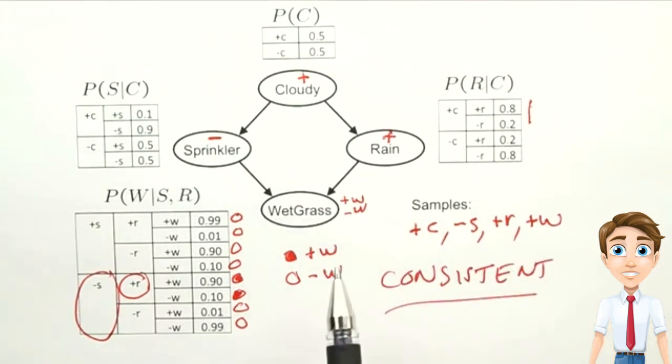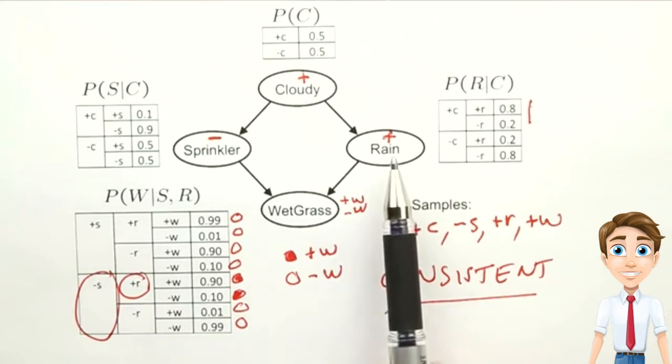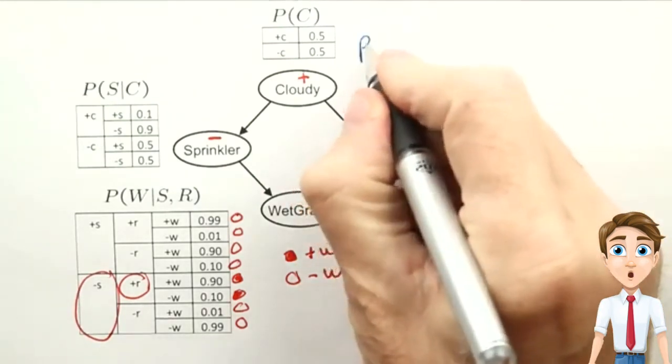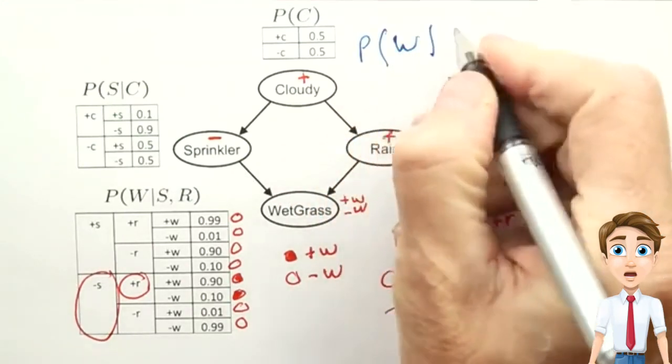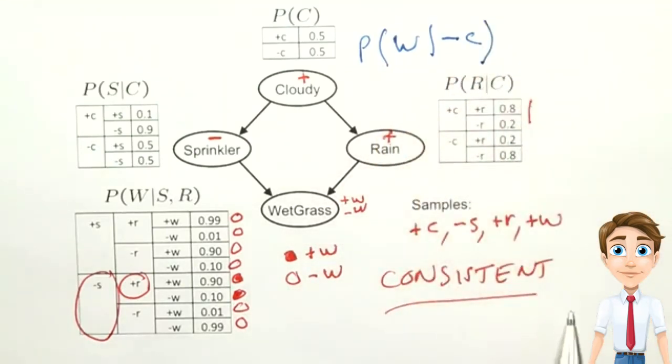We can use this kind of sampling to compute the complete joint probability distribution, or we can use it to compute a value for an individual variable. But what if we wanted to compute a conditional probability? Say we wanted to compute the probability of wet grass given that it's not cloudy.